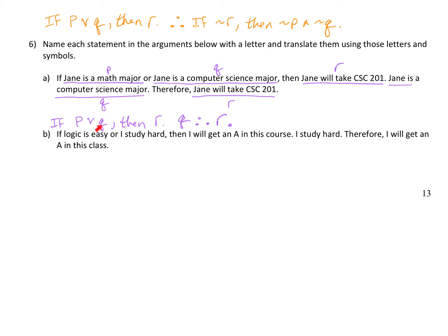So this is the form of the argument versus the content. p, q, and r could be any sentences that are either true or false, and we can represent them in this format. One more: 'If logic is easy or I study hard, then I will get an A in this course. I study hard, therefore I will get an A in this course.' Logic is easy is p, I study hard is q, I will get an A is r. Translated: if p or q, then r. q, therefore r.